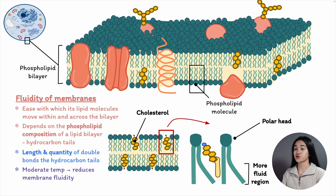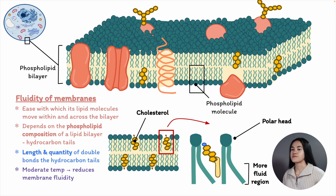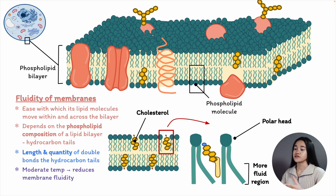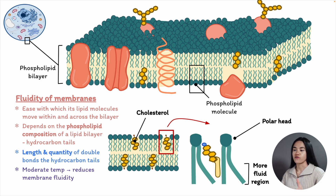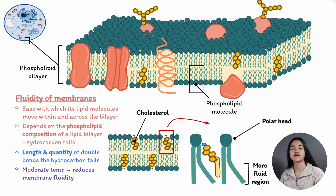Why is membrane fluidity important? First, it makes it possible for multiple membrane proteins to interact with one another and diffuse quickly across the bilayer, which is essential for processes like cell signaling. It allows membrane lipids to diffuse to different parts of the cell from where they are produced. When a cell divides, fluidity ensures membrane molecules are distributed equally across daughter cells. It also enables the fusion of membranes and the mixing of their molecules under the right circumstances. If membranes were not fluid, it would be very difficult to understand how cells could live, grow, and reproduce.